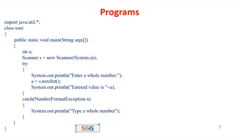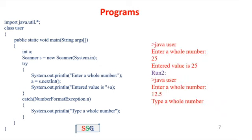In the try block, there is one catch block. System.out.println prints 'enter the whole number'. Then a = s.nextInt() and System.out.println prints 'the entered value is ' plus a. The catch block handles NumberFormatException n and prints 'type a whole number'. First run: java User — enter the whole number — input equals 25. Since 25 is an integer, s.nextInt() converts it with no problem. The output is 'the entered value is 25' — no error, finish.